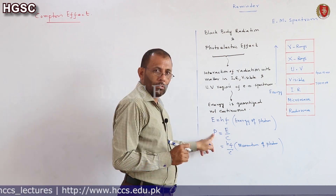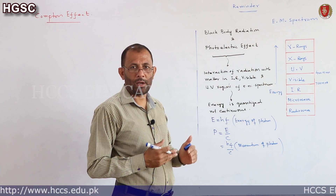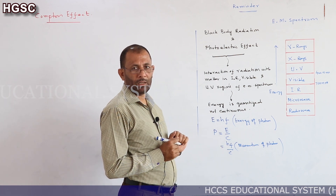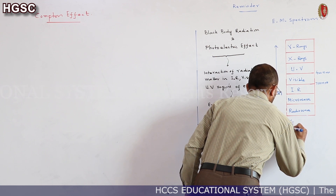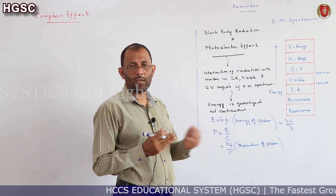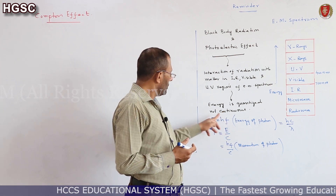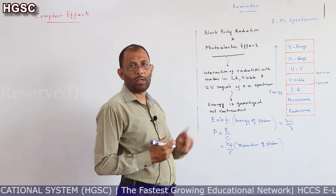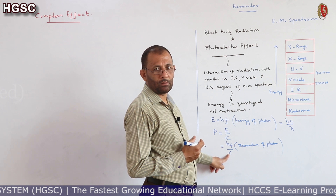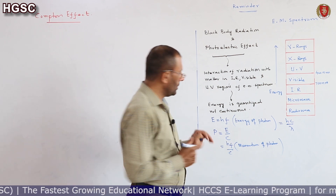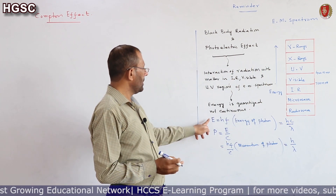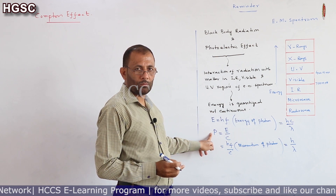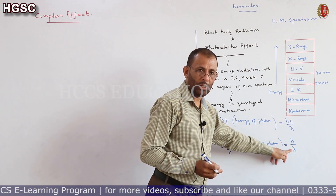The radiations with the greatest energy are those with the highest frequency, and their photons also have the greatest momentum. We can also write energy in terms of wavelength: E = hc/λ, since c = fλ and f = c/λ. Similarly, the momentum of a photon in terms of wavelength is p = h/λ. So energy and momentum are both directly proportional to frequency and inversely proportional to wavelength.